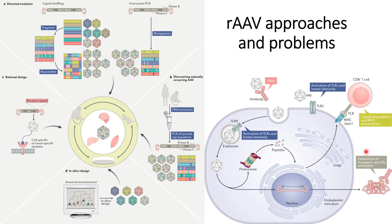So in this way, different rAAV approaches can be used to make rAAV, and some of the problems related to activation of immune response will reduce the efficiency of rAAV. All this needs to be taken care of while developing any virus based on recombinant adeno-associated virus. If you need to understand these things in detail, you can go through the reference provided in the description. That's all for this video, thank you for your time.